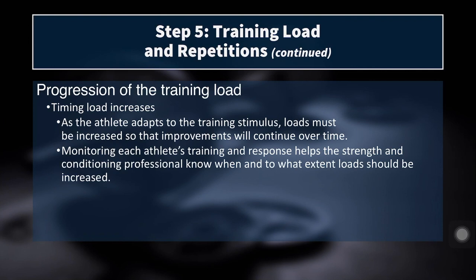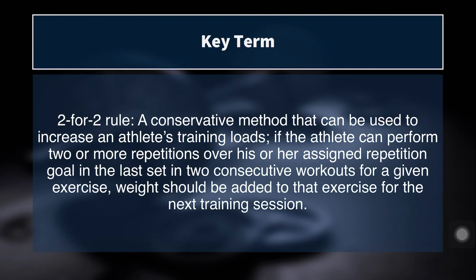We also need to progress the load in training. We want to appropriately time load increases — should we add weight every time we enter the gym? Probably not. But as the athlete adapts to the training stimulus, loads must be increased so that improvements continue — the principle of progressive overload. We must monitor athletes' training and response to it. The NSCA has the two-for-two rule: if the athlete can perform two or more repetitions over their assigned repetition goal in the last set, in two consecutive workouts for a given exercise, then weight should be added for the next training session.